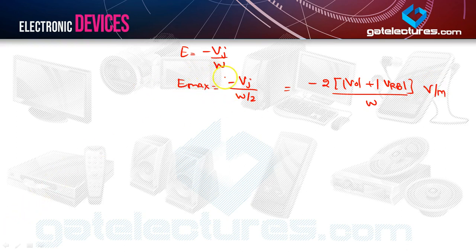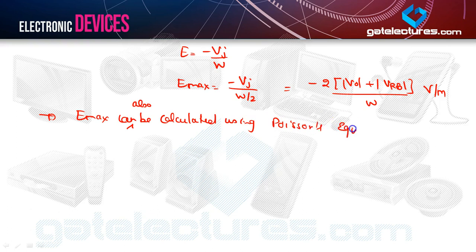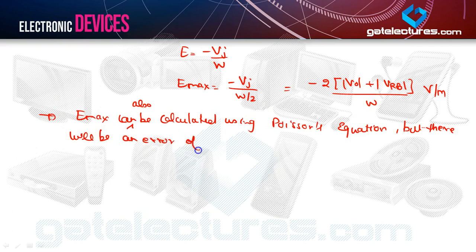This maximum electric field intensity can also be calculated using Poisson's equation, but there will be an error of plus or minus 15 percent, which is basically acceptable.